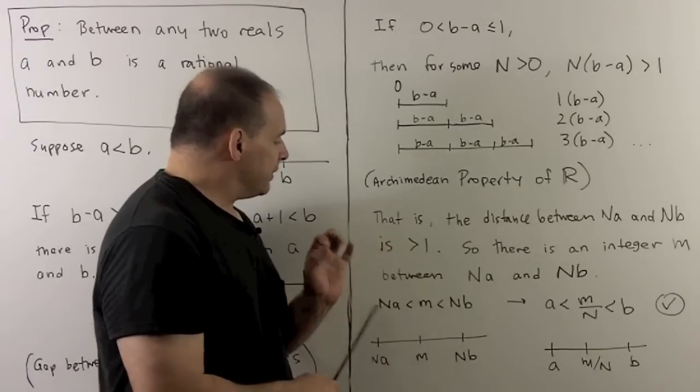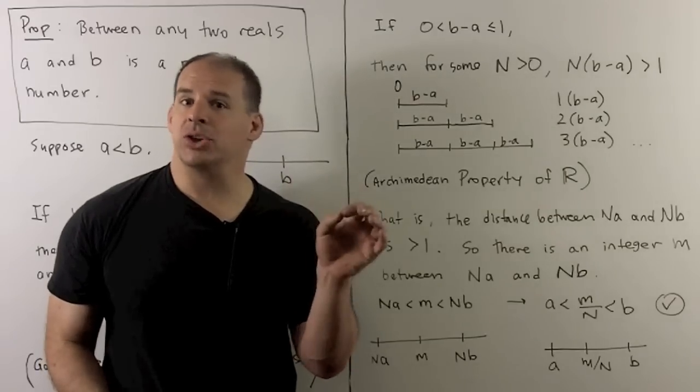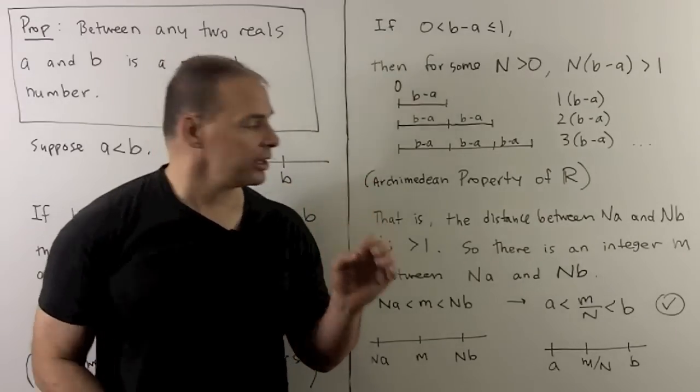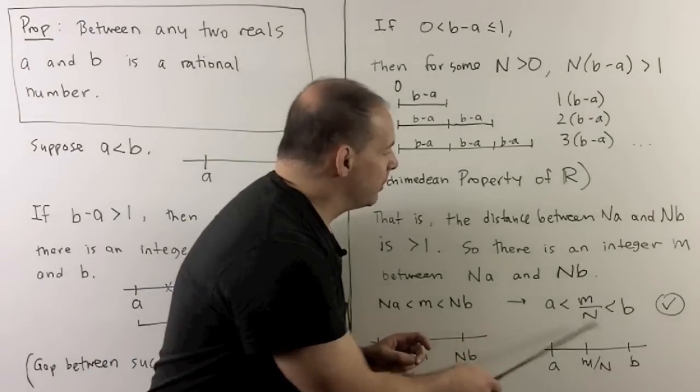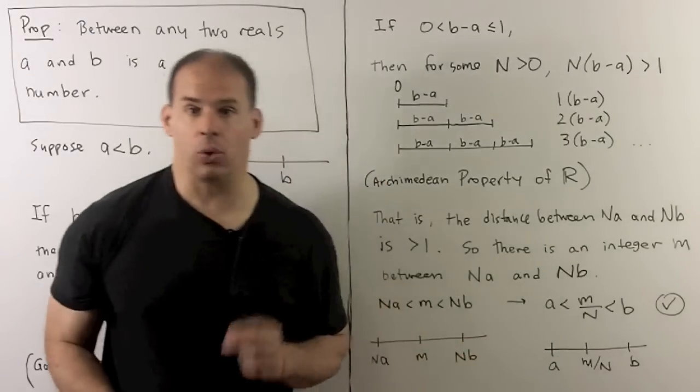Well, you'll note this is the same as saying the distance between n a and n b, strictly bigger than one. So, we can use our first part to say that there's an integer between n a and n b. Now, if we divide through here by n, n's positive, so it doesn't change the inequality directions, we wind up with the rational number between a and b that we're looking for.